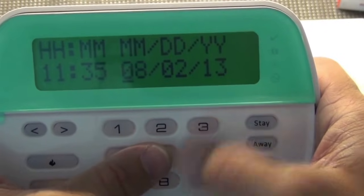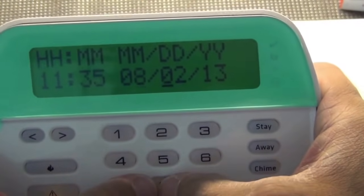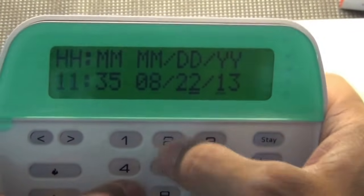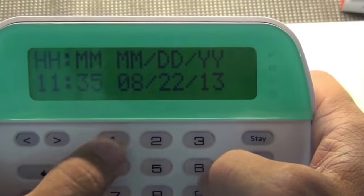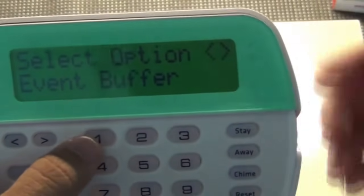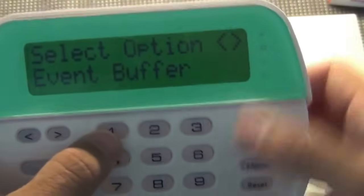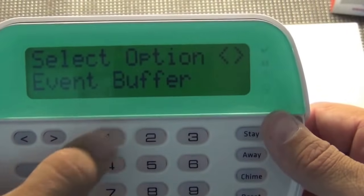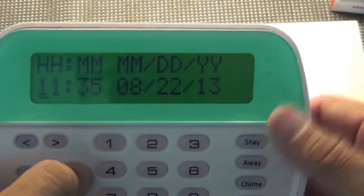All right, time is military time, two-digit hour, two-digit minute, two-digit month, two-digit day, two-digit year, and just put a random time in there. If you get it wrong, you can come back to this section here, you can just hit one.